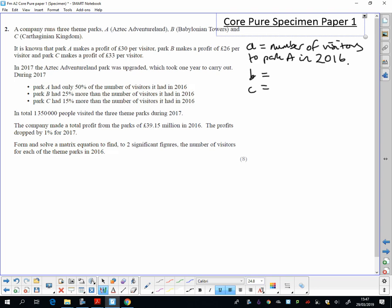Right, then we're going to look at the information we've got and what we can do with this. We have to use this information here - we know that A makes a profit of £30 per visitor, B makes a profit of £26, and so on. Let's see if we can write an equation about the profit. The profit from park A is going to be 30 times A, the profit from park B is 26 times B, and the profit from park C is 33 times C. There must be some more info somewhere to turn that into an equation.